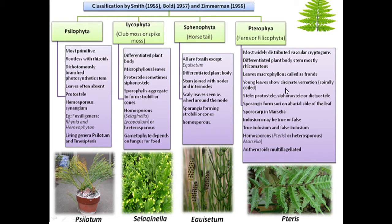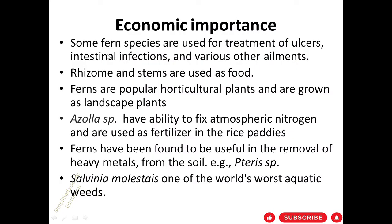In Pterophyta, the stele is protostele, siphonostele, or dictyostele. Sporangia form on the abaxial side of the leaf, and sporocarps in aquatic species are present. Indusium may be true or false. They may be homosporous or heterosporous, and antherozoids are multi-flagellate, meaning they have more than one flagellum.